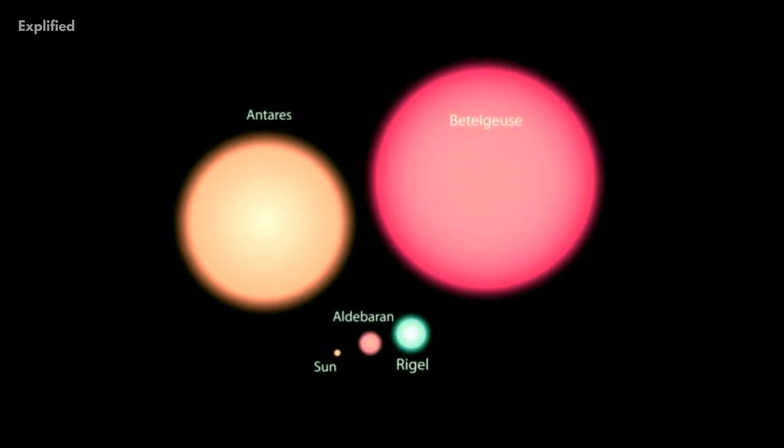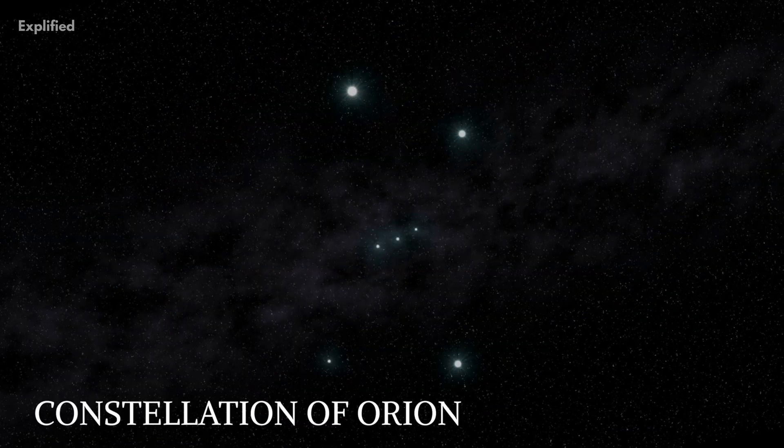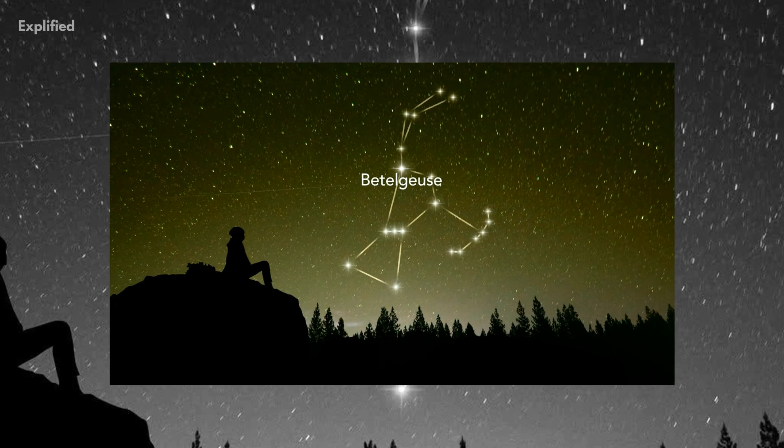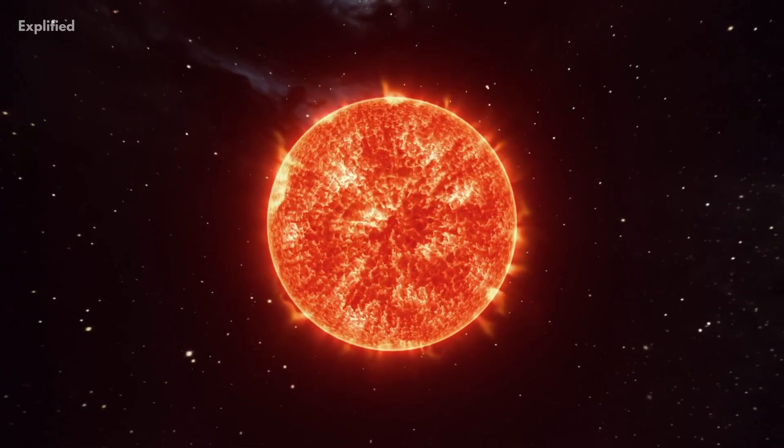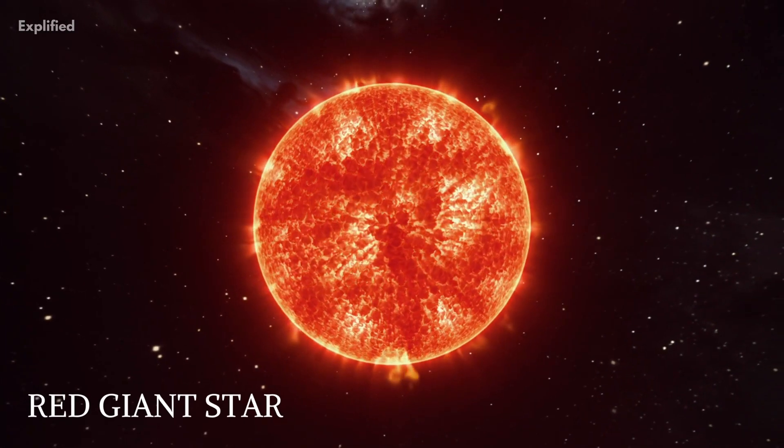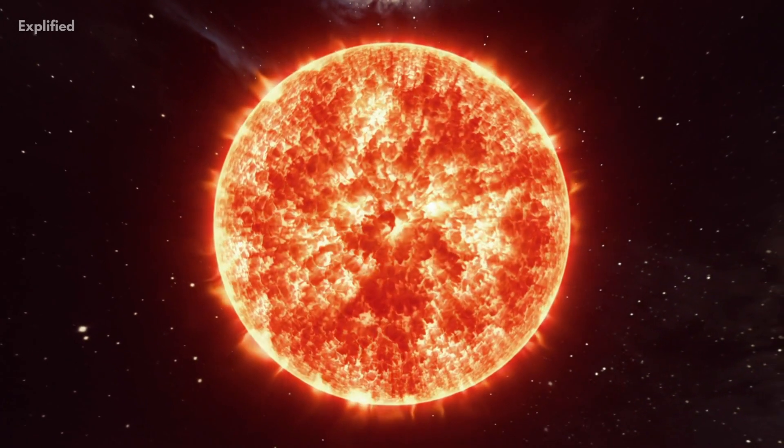Betelgeuse is the closest supergiant to our Sun. It is dark red in color and is in the constellation of Orion, located in the Northern Hemisphere. It is one of the top 10 brightest stars in our sky. We know that it is a red giant star which is an indication that it is approaching the end of its life cycle pretty soon.